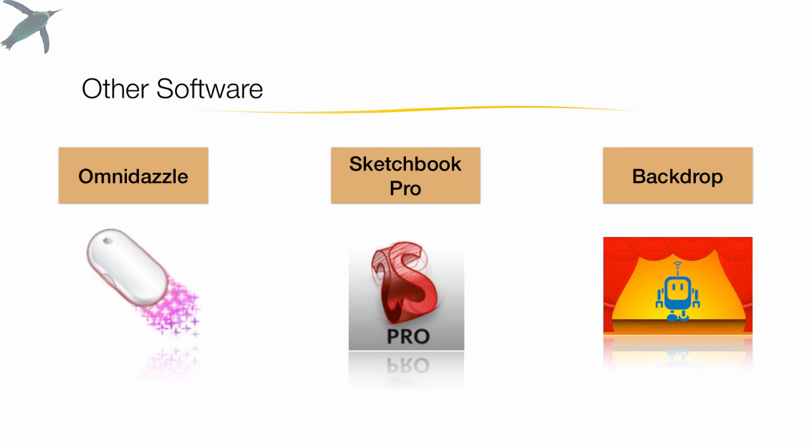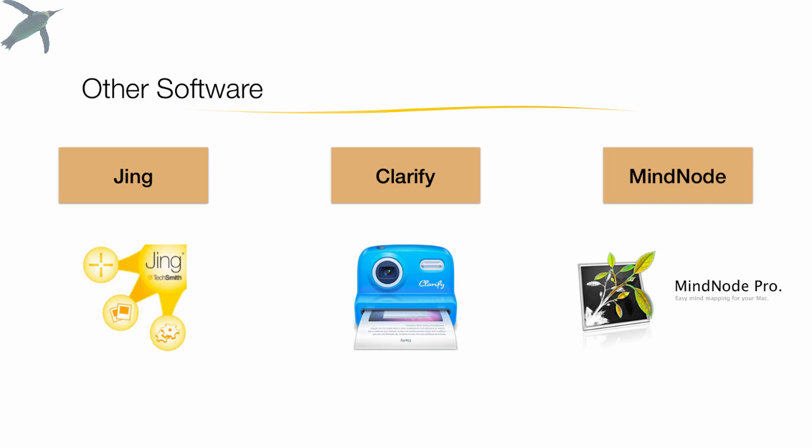Other software I use: OmniDazzle is really cheap — a couple of bucks — and it allows you to have cool effects on your screen like spotlights. Sketchbook Pro is what I use for drawing; I make a lot of my own images and cartoons. Backdrop is a cool little app that lets you cover your desktop when you're doing partial windows on your screen. I use Jing — a TechSmith product — it's really handy to capture images and video, and it's free. Clarify lets you make great instructional documents and PDFs, and sometimes they end up in my videos. And MindNode is mind mapping software, which is really cool for video sometimes.